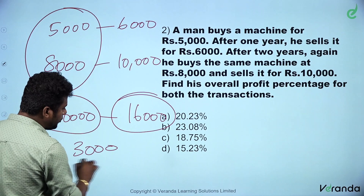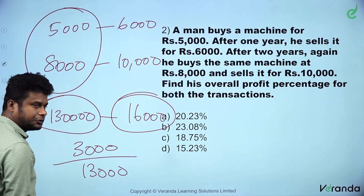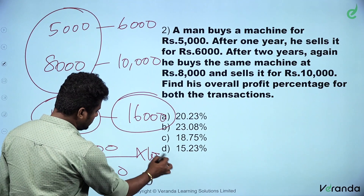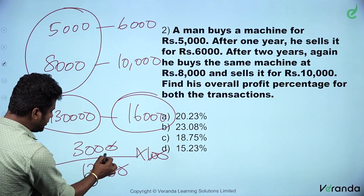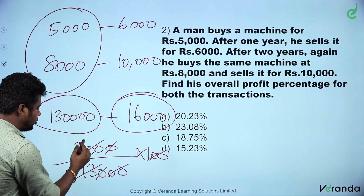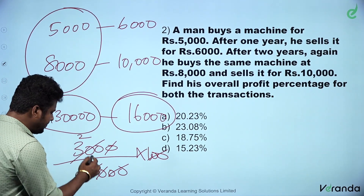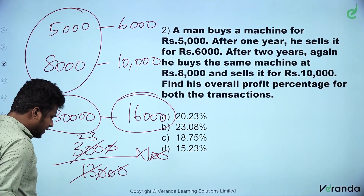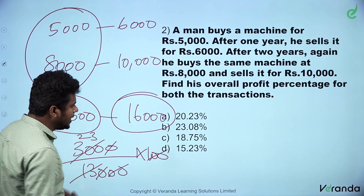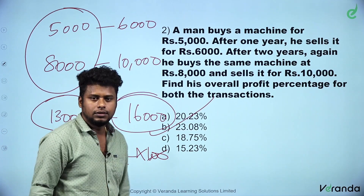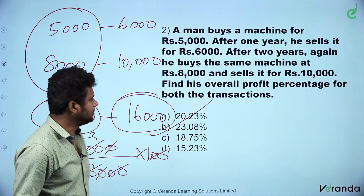This is the cost price into 100. The calculation gives Option B as the right answer.